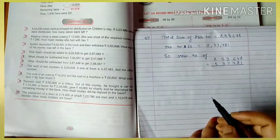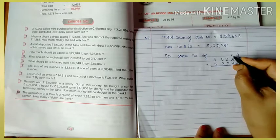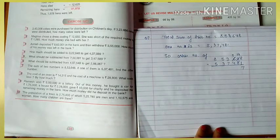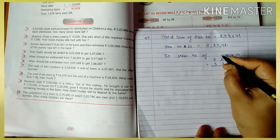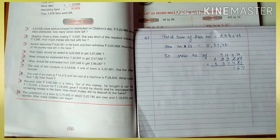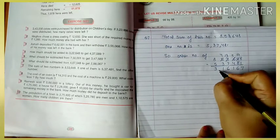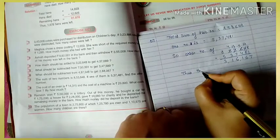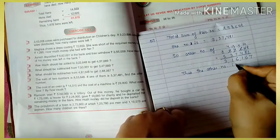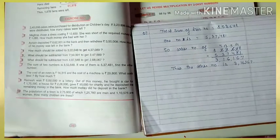Now let's calculate: 8 minus 1 is 7. 4 minus 8 is not possible, so it will be 14 — carry 1 — 14 minus 8 is 6. 5 minus 4 is 1. 3 minus 4 is not possible, so it will be 13 — carry 1 — 13 minus 7 is 6. 4 minus 3 is 1. 8 minus 5 is 3. So the other number is 3,16,167. Note down fast.